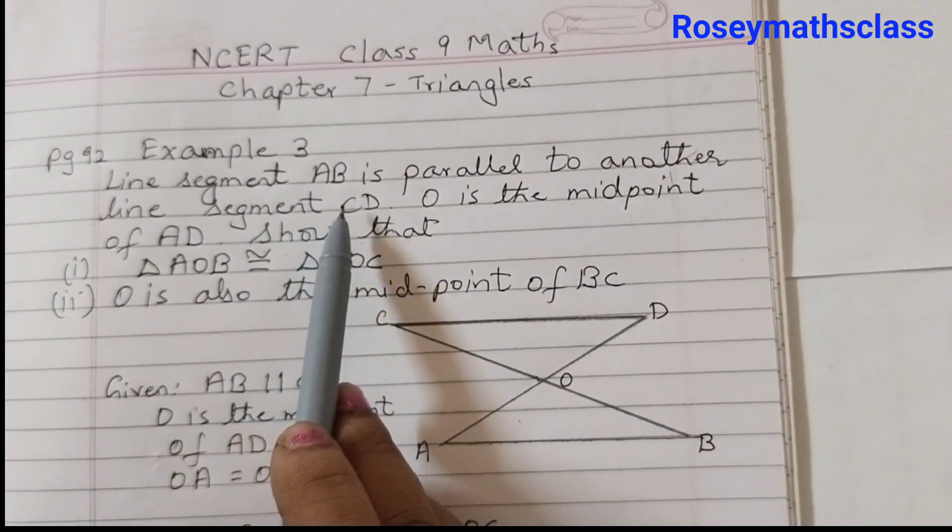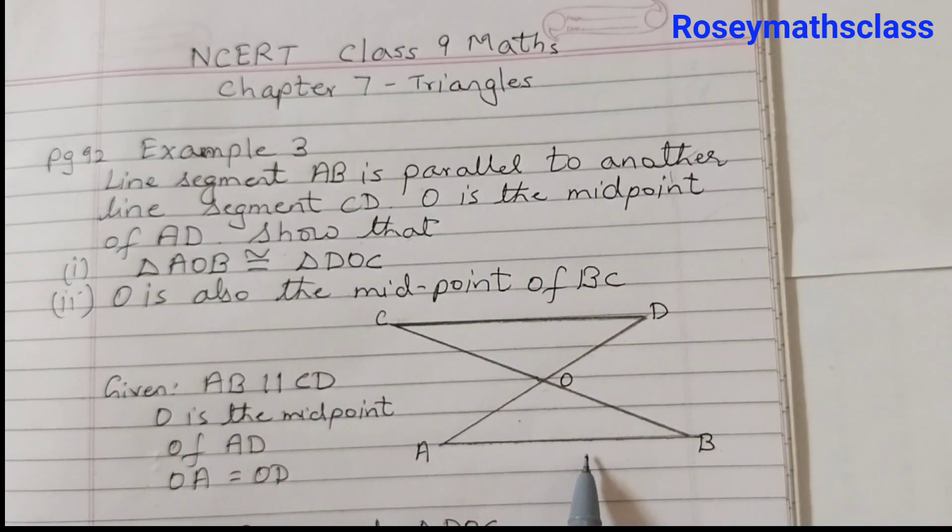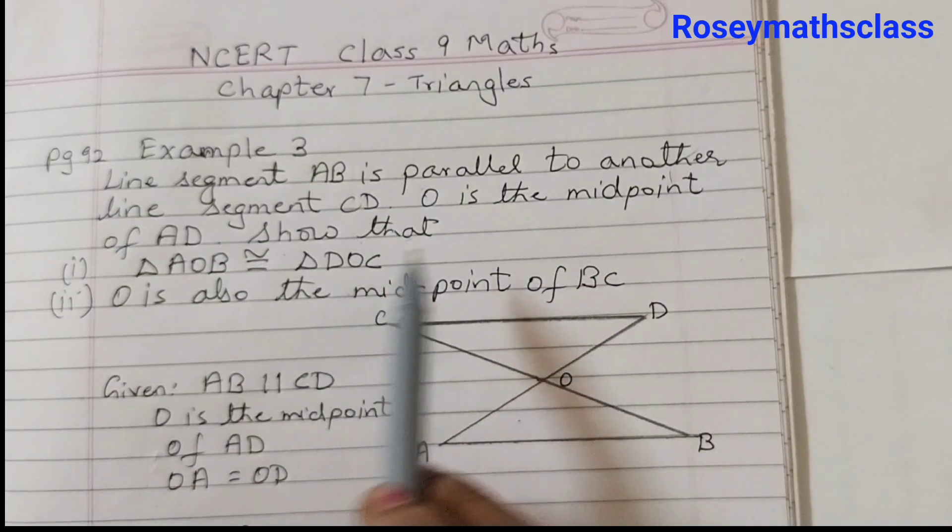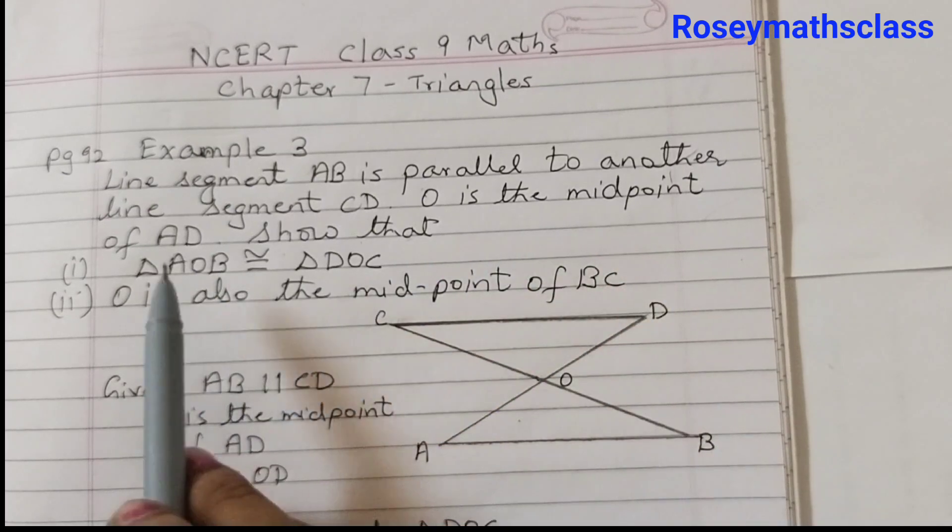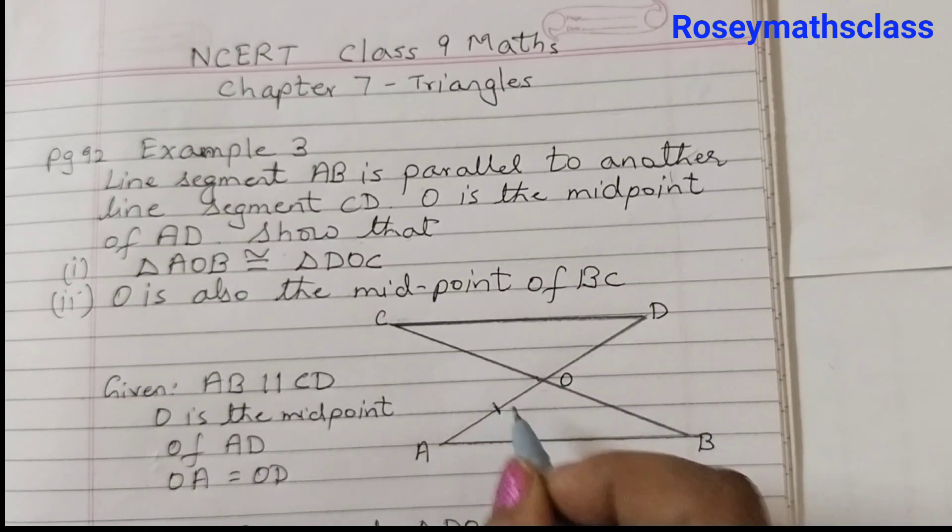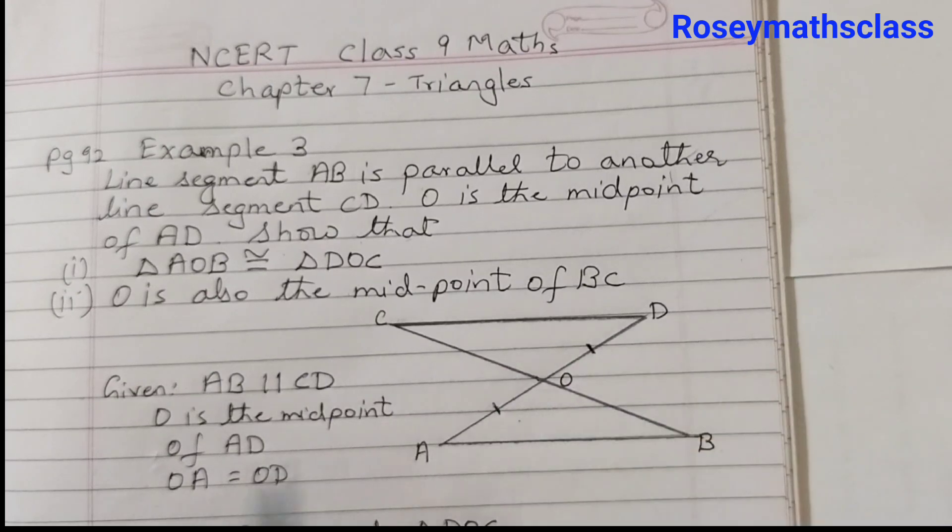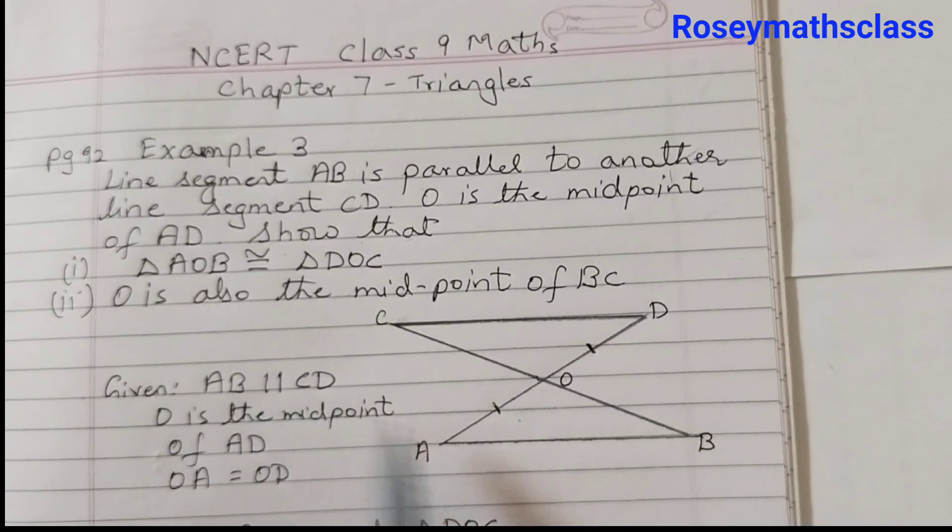Line segment AB is parallel to another line segment CD. O is the midpoint of AD. That means OA and OD, these two are equal.